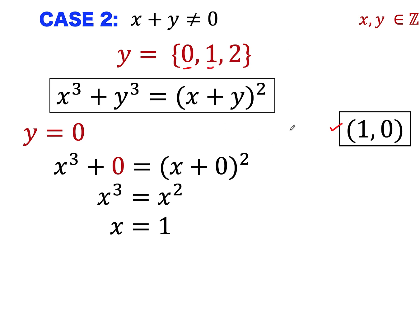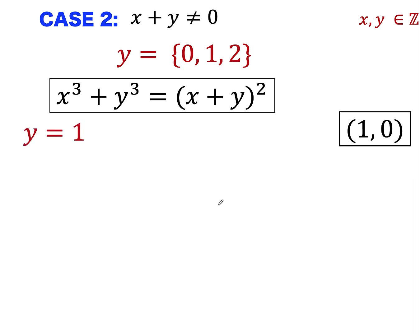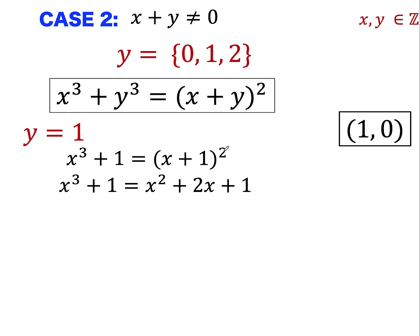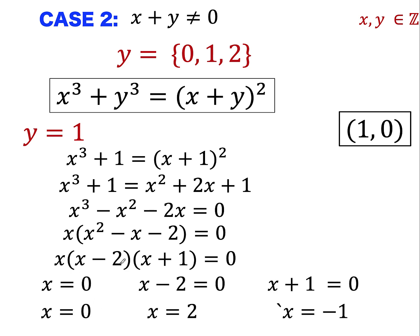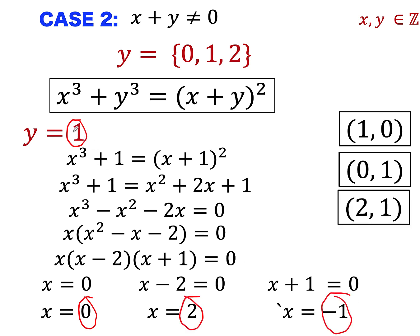When y equals 1, substituting and expanding the right side gives x squared plus 2x plus 1. Writing everything on the left side equal to zero, there's a common factor of x, and x squared minus x minus 2 factors as the quantity x minus 2 times the quantity x plus 1. Therefore x equals 0, x equals 2, and x equals negative 1. The ordered pairs are (0, 1), (2, 1), and (-1, 1). Notice that (-1, 1) are additive inverses already covered by case 1, so we eliminate that pair.